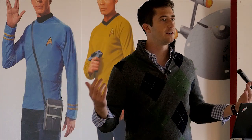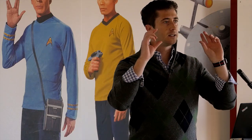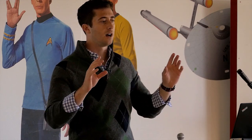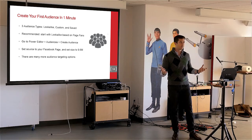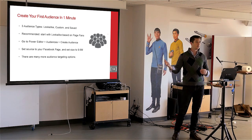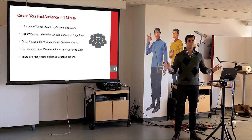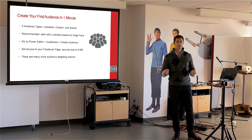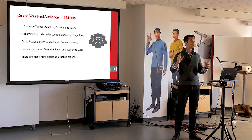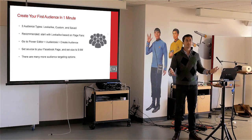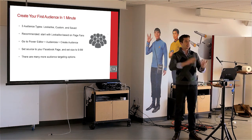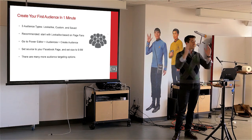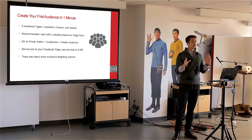To create a lookalike, go into Power Editor, go to Audiences, pick Create Audience, and select Lookalike. Set the source to your Facebook page — you need an active Facebook page with at least 100 page fans. You'll set the target size for the lookalike to 9.6 million, which is maximized for reach, assuming your target country is the US. The range is from 1.9 million to 19.6 million — 9.6 million is right in the middle, a good balance of reach and specificity.